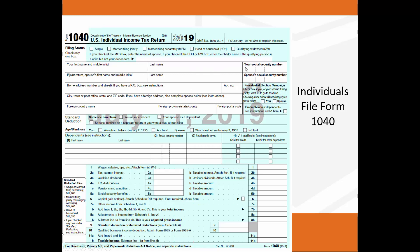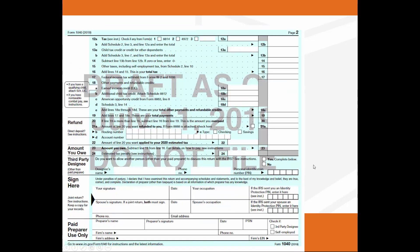The 1040 has your name, social security number, spouse's information at the top, then wages, standard deduction, and taxable income. You're going to be very familiar with this form by the end of class. Page two carries over your taxes, payments and credits made during the year, total payments, the amount you've overpaid or owe, and a place to sign. It looks straightforward, but don't be fooled — the 1040 is only two pages on its face.